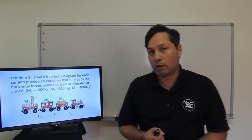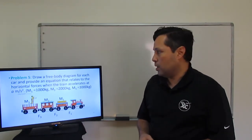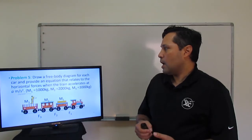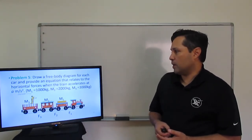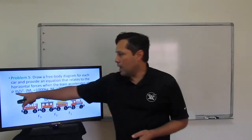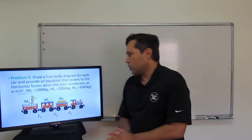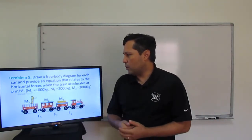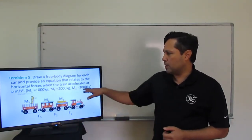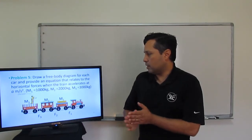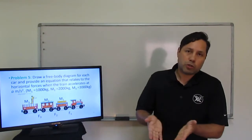For our first problem, problem number 5, it's about forces acting on a train. We need to draw a free-body diagram for each car and provide an equation that relates to the horizontal forces when the train accelerates at a meters per second squared. The masses given are M1 = 1,000 kg, M2 = 2,000 kg, and M3 = 3,000 kg for carts one, two, and three respectively.